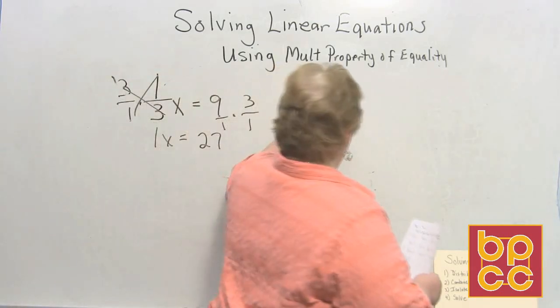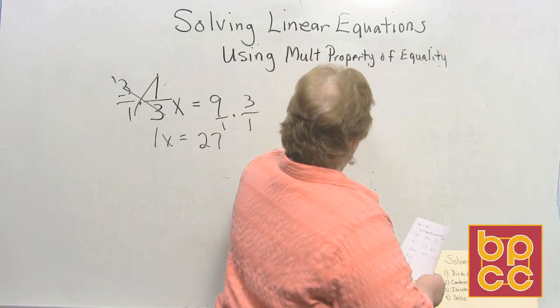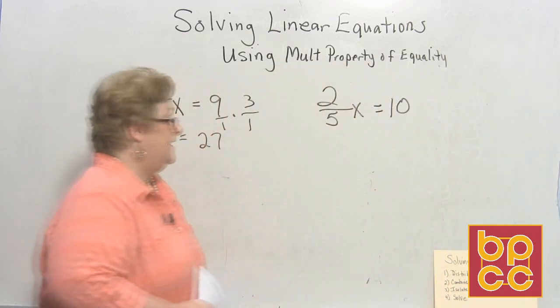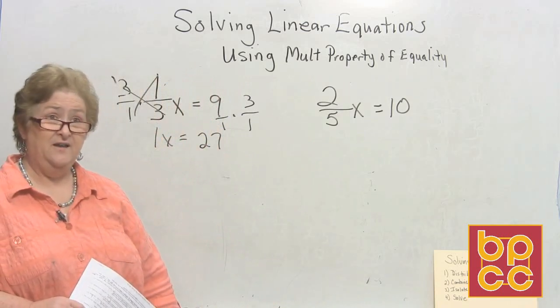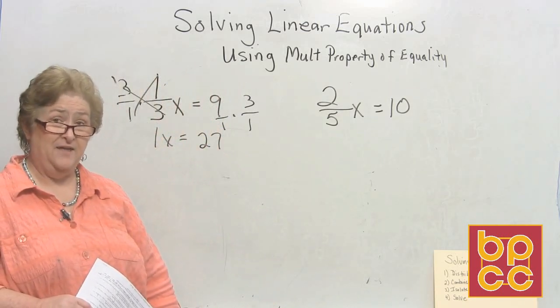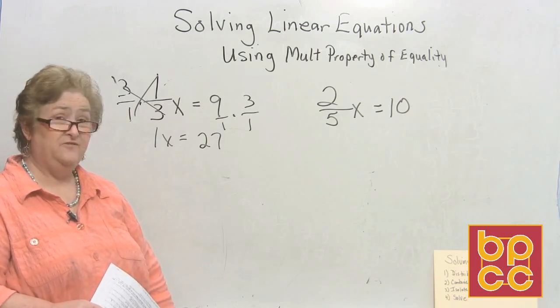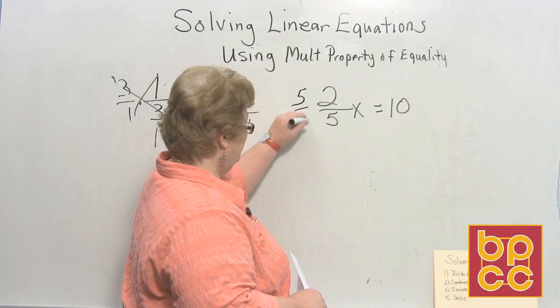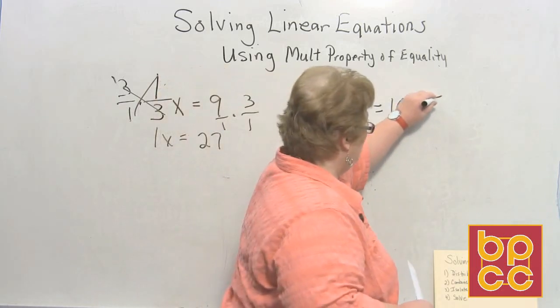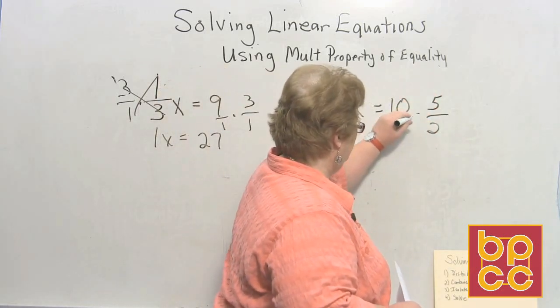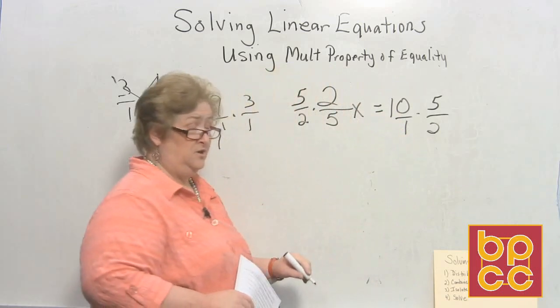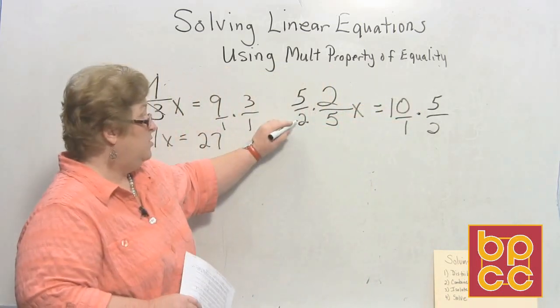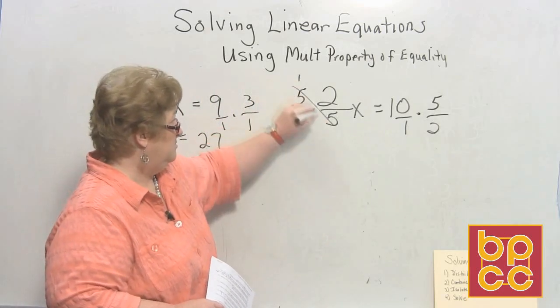Let's say that we have 2/5 x equal 10. The fraction is 2/5 and I want to multiply both sides by the reciprocal. So the reciprocal of 2/5 is 5 over 2. So I'm going to multiply by 5 over 2. And on this side, I'm going to multiply by 5 over 2. Since I'm using fractions, I'll just put a 1 underneath that 10. Well, when you cross multiply, those clear out and those clear out.